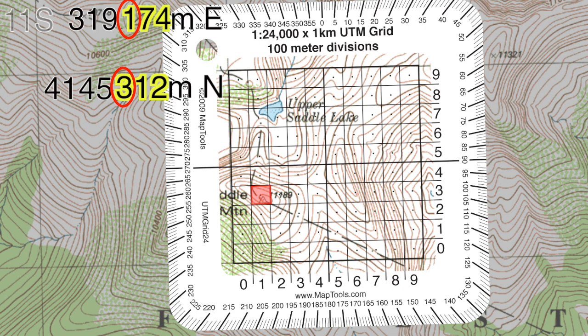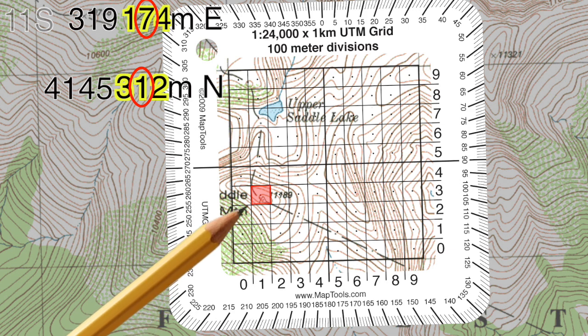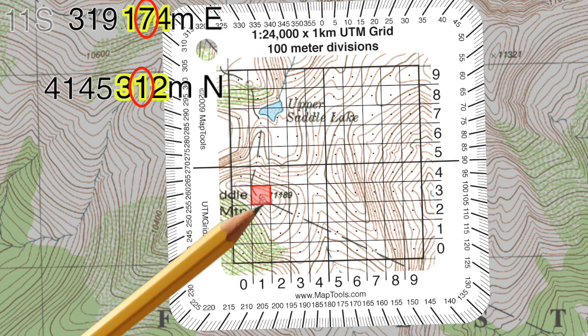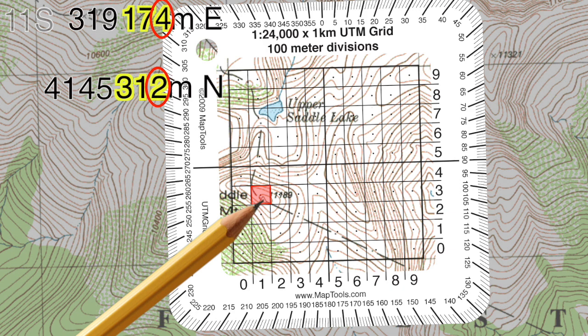Sometimes you'll want to know your location with more precision than just two soccer fields. We can use the 10 meter digits from our coordinates to estimate the position within the 100 meter square. For our coordinate, that would be 70 meters east and 10 meters north. Each 100 meter square has a dot in the center, 50 meters from each edge. Use that dot to help estimate position within the 100 meter square. The 1 meter digits in our coordinate represent such a small mark on our map that they are rarely used when plotting.